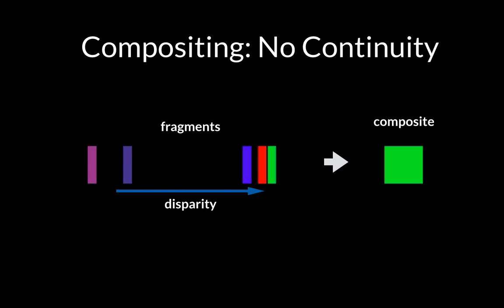This animation demonstrates the problem with non-continuous compositing methods. The blue fragment smoothly changes disparity affecting the ordering of fragments. This causes a discontinuous change in the composited color.